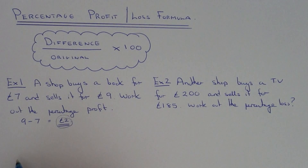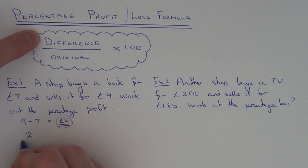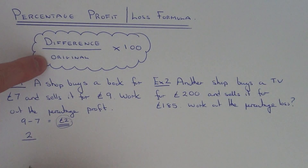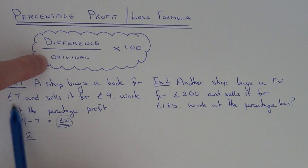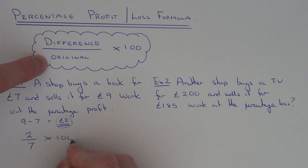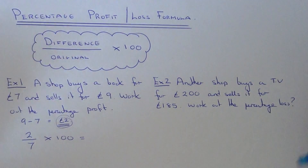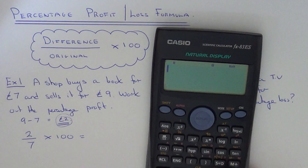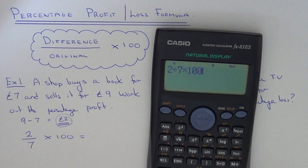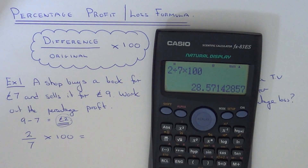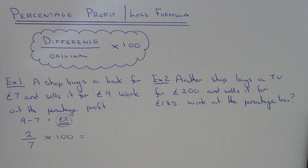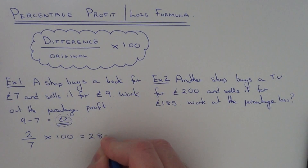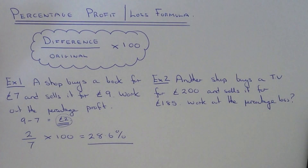So that's our difference. We do 2 divided by the original price, which is £7, and then we need to times that answer by 100. So if you get your calculator and do 2 divided by 7 times 100, that gives an answer of 28.6%. So that answer is your percentage profit.